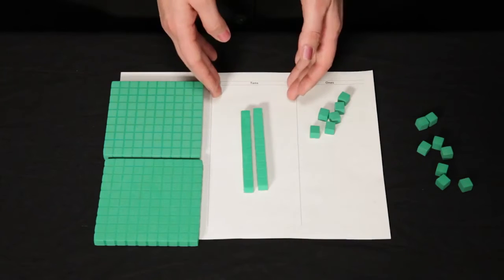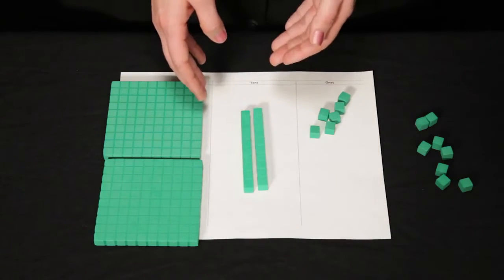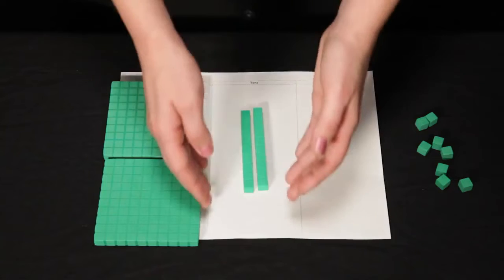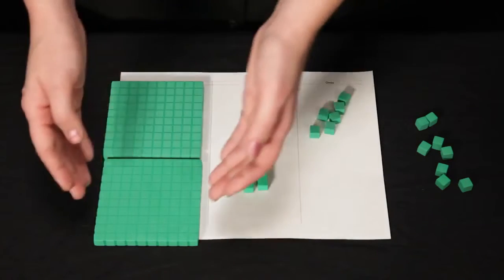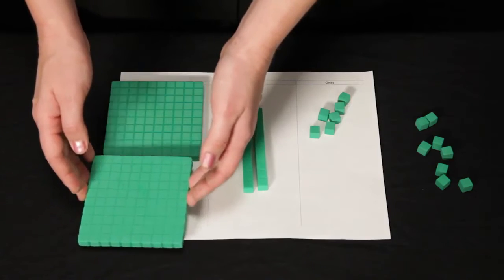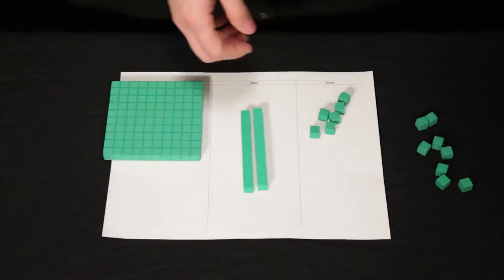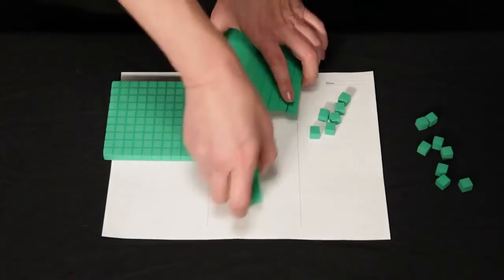Now I'll move here to the tens column. 88 has 8 tens, so I need to take away 8 tens. But I don't have 8 tens that I can take away. So I'll do the same thing, but this time I'll regroup from the hundreds column. I'll regroup 100 for 10 tens.